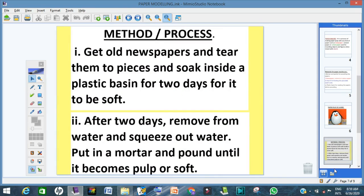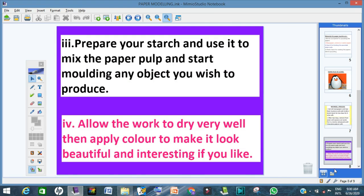Let us look at the method or process. The process number one says get a newspaper, tear it into pieces, and soak it into a plastic basin for two days. After two days bring it out, squeeze out the water, and then pound in a mortar. If you don't have mortar to pound it, then you can pound it on a terrazzo floor with stone so that the paper will become soft.